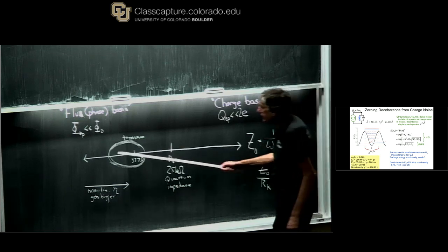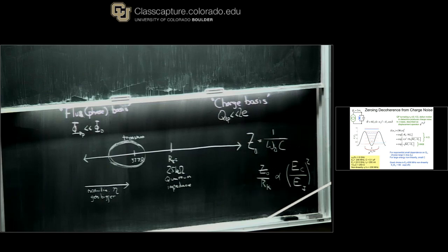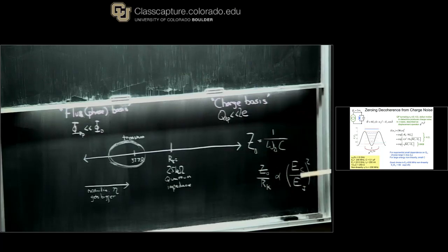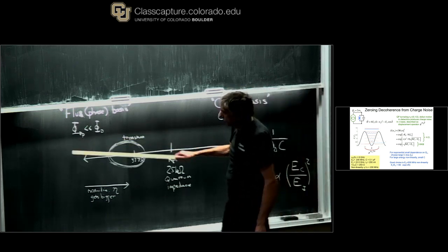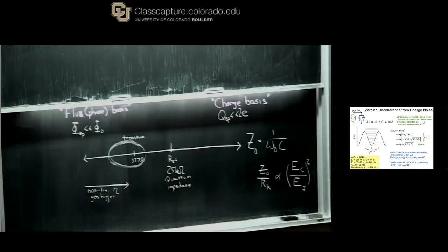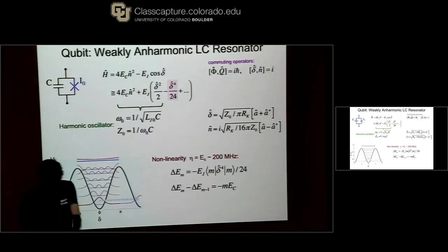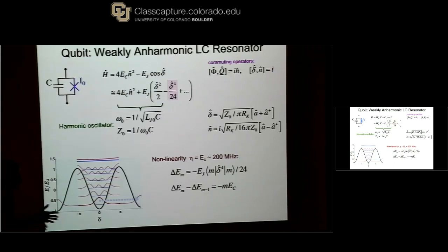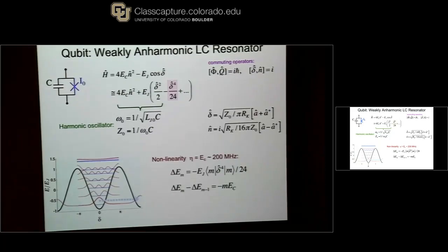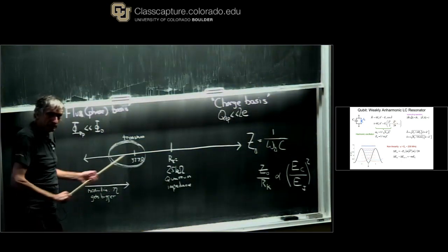We're naturally going to be in the flux/phase basis. Out in the charge basis, your charge wiggles a little bit and causes wiggling of your qubit frequency and dephasing. So you want to be in the phase basis. Note that Z₀/RK goes as (EC/EJ)². As you go toward the phase basis, the charging energy gets lower and lower. The non-linearity of the system — the difference in energy between levels — goes as EC. We need non-linearity to make a qubit, and you want to make it as large as possible for fast transitions. So down in the phase basis is bad for non-linearity. How do you optimize that?